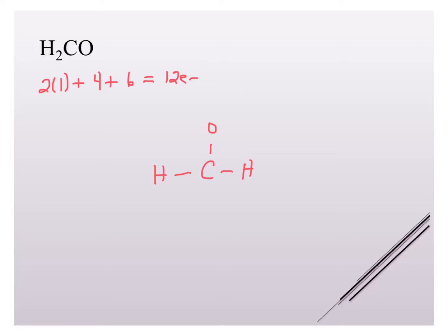Then I'm going to see, I've used six electrons, I have six left. I see that hydrogen doesn't want any more electrons, those have complete duets, so they're happy. I can put the remaining six electrons on oxygen, which is using up all my electrons, but carbon doesn't actually have an octet.